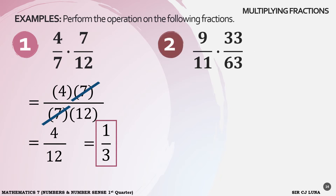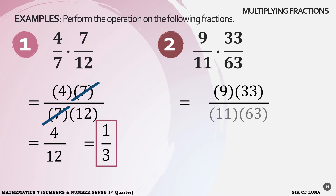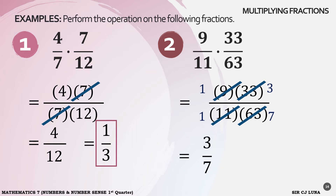Example number 2: 9 over 11 times 33 over 63. Get the product of the numerators and then the product of the denominators: 9 times 33 all over 11 times 63. You don't have to multiply these numbers — look for factors where you can use cancellation. We can cancel 11 and 33 by 11: 33 becomes 3 and 11 becomes 1. We can also cancel 9 and 63 by 9: 9 becomes 1 and 63 becomes 7. So now the final answer is 1 times 3 over 1 times 7 — that's 3 over 7.